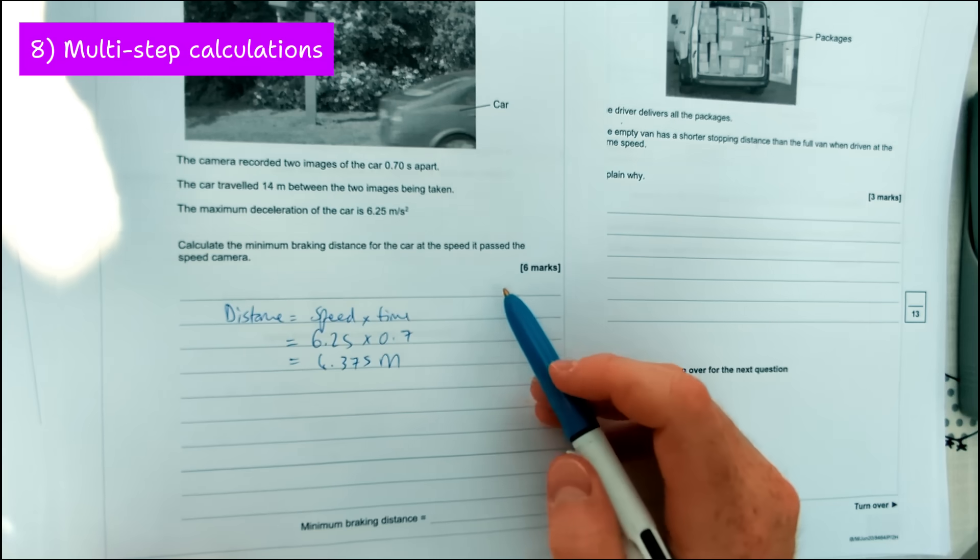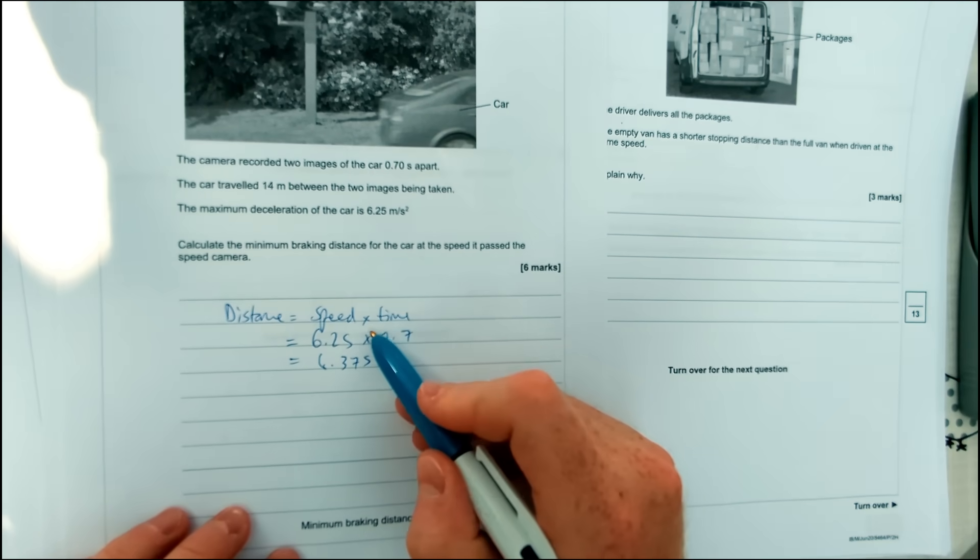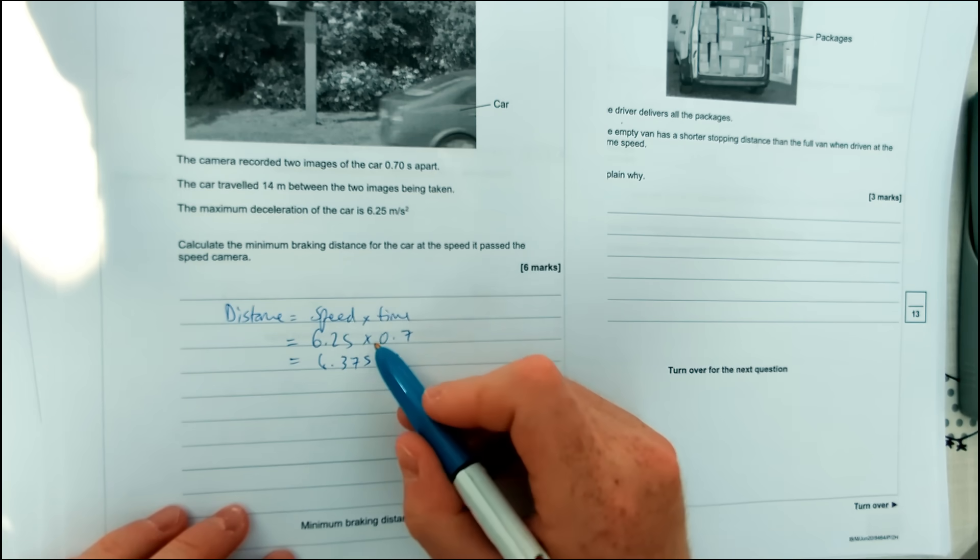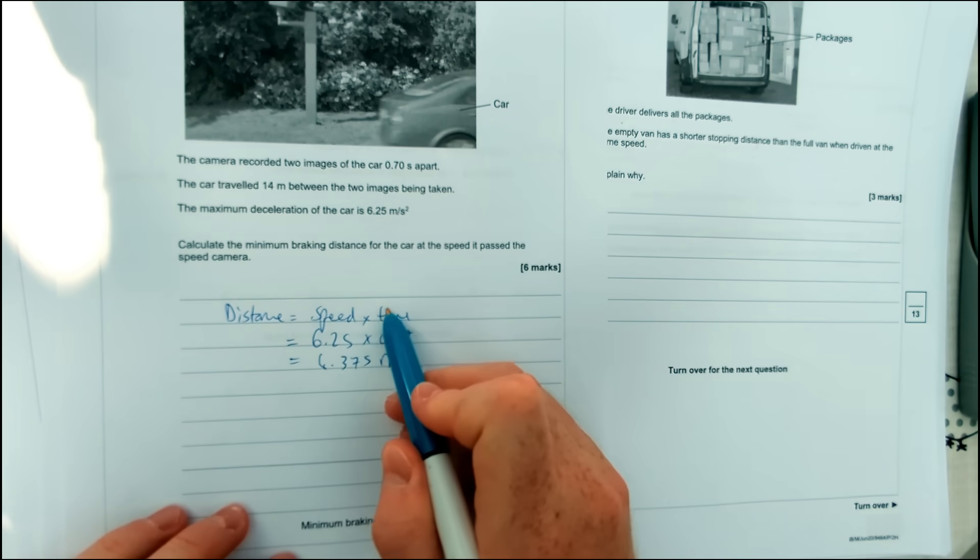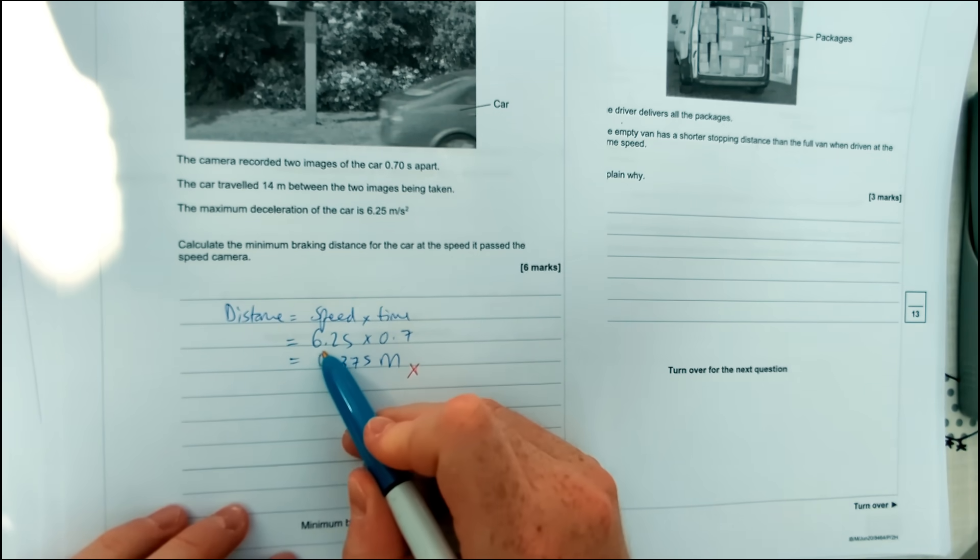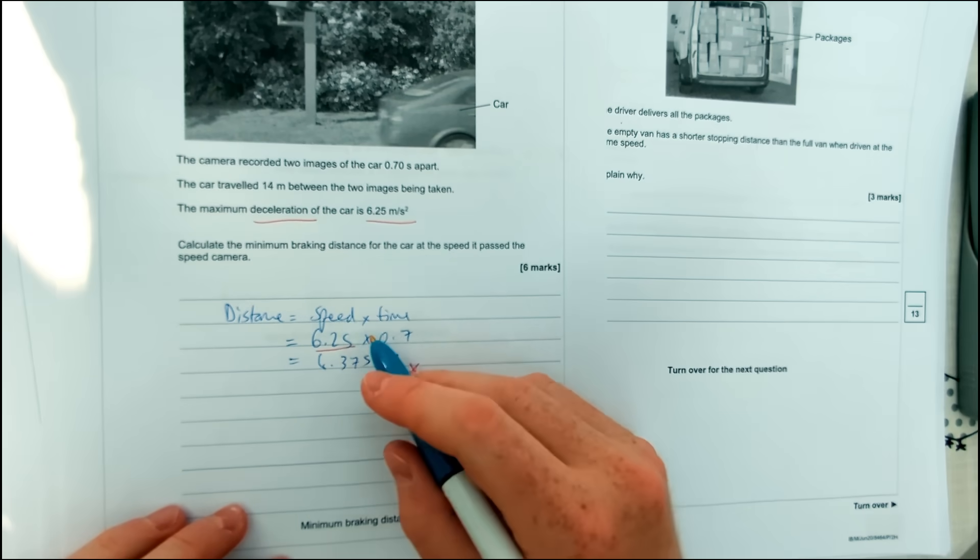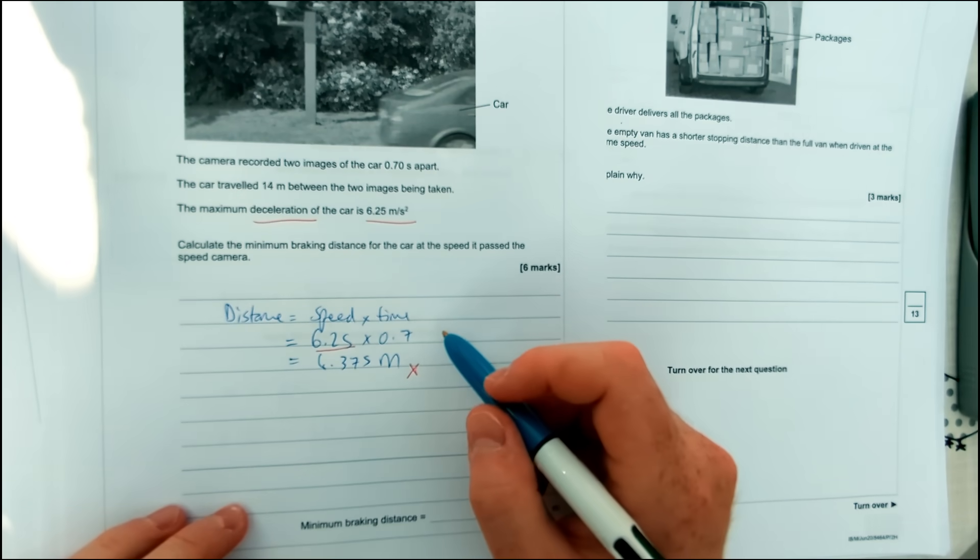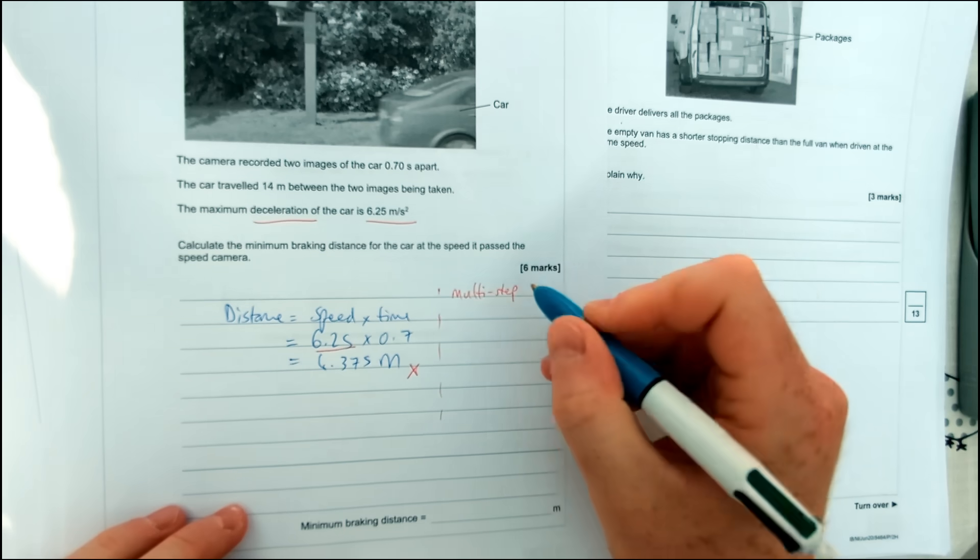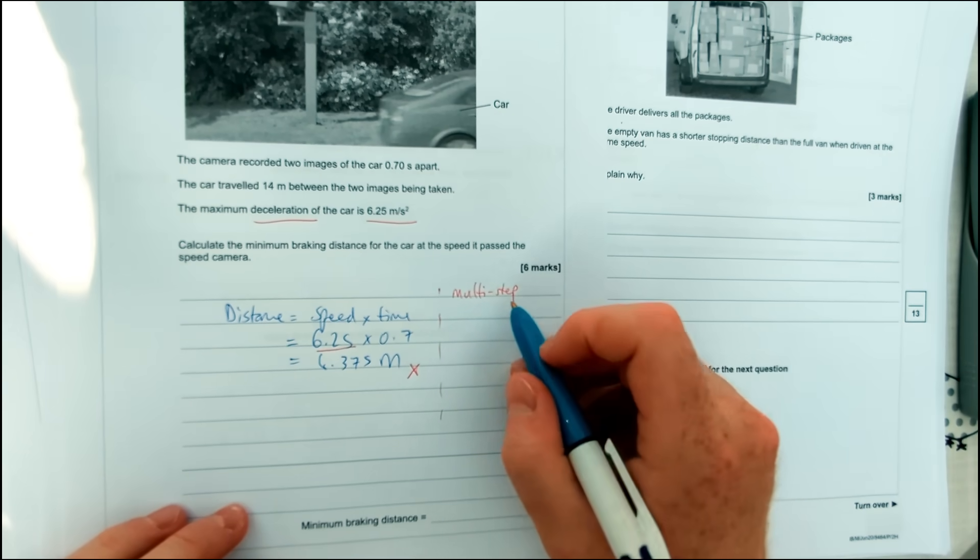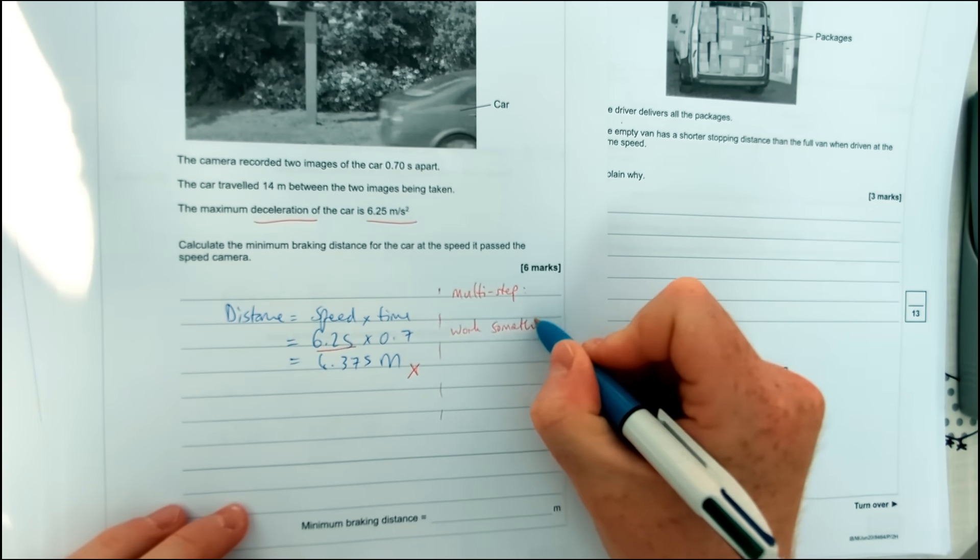In a question like this where you've got a multi-step equation, some students can be tempted just to try and use one equation and start trying to con the examiner. So when you mark your answers, be really harsh with yourself. This person's not getting any marks for this question unfortunately. The reason is they wrote down distance equals speed times time, which is a correct equation to use, but they've used it incorrectly. What they've used as the speed is actually the deceleration. So they've not used it correctly at all. So what my top tip for multi-step equations would be.